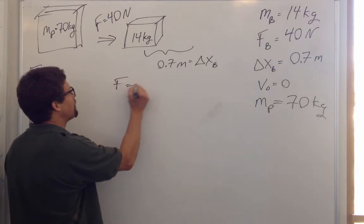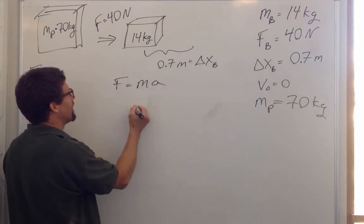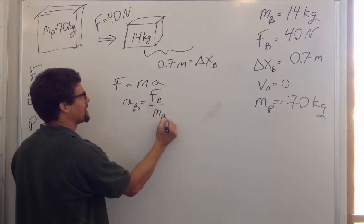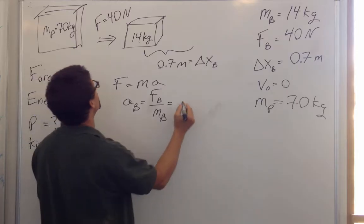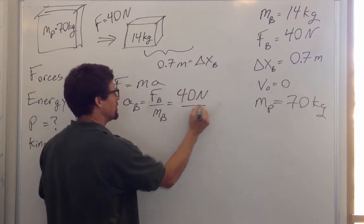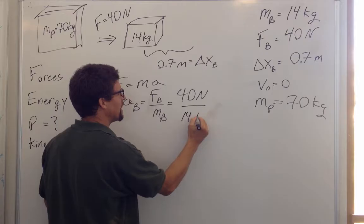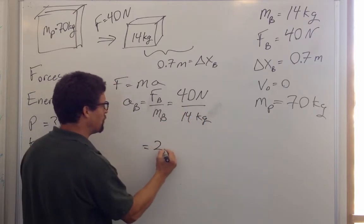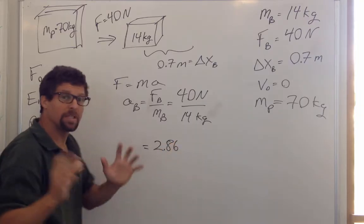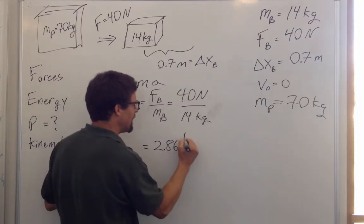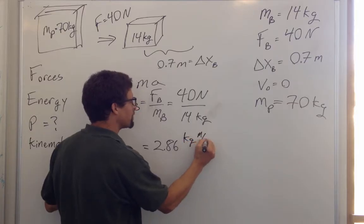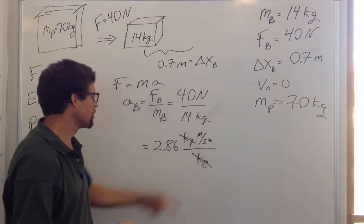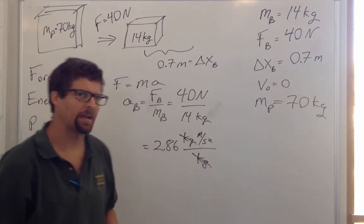Let's solve for the forces. F equals ma, so the acceleration of the box equals the force divided by the mass: 40 Newtons divided by 14 kilograms. That comes out to 2.86, and importantly, a Newton is a kilogram·meter per second squared divided by kilograms — the kilograms cancel, giving units of acceleration.